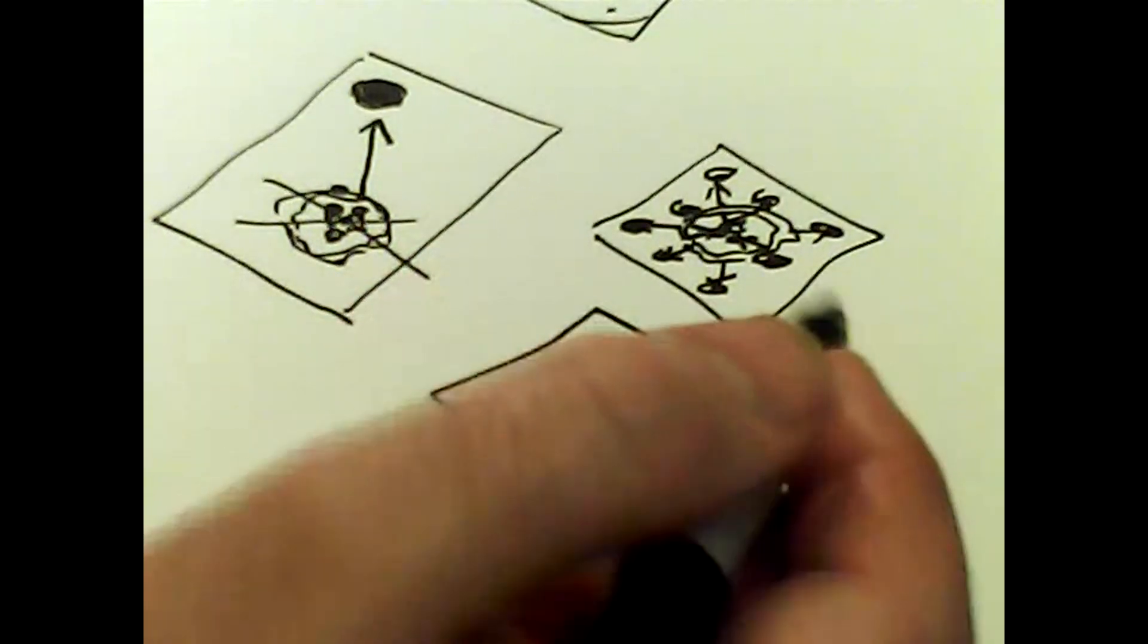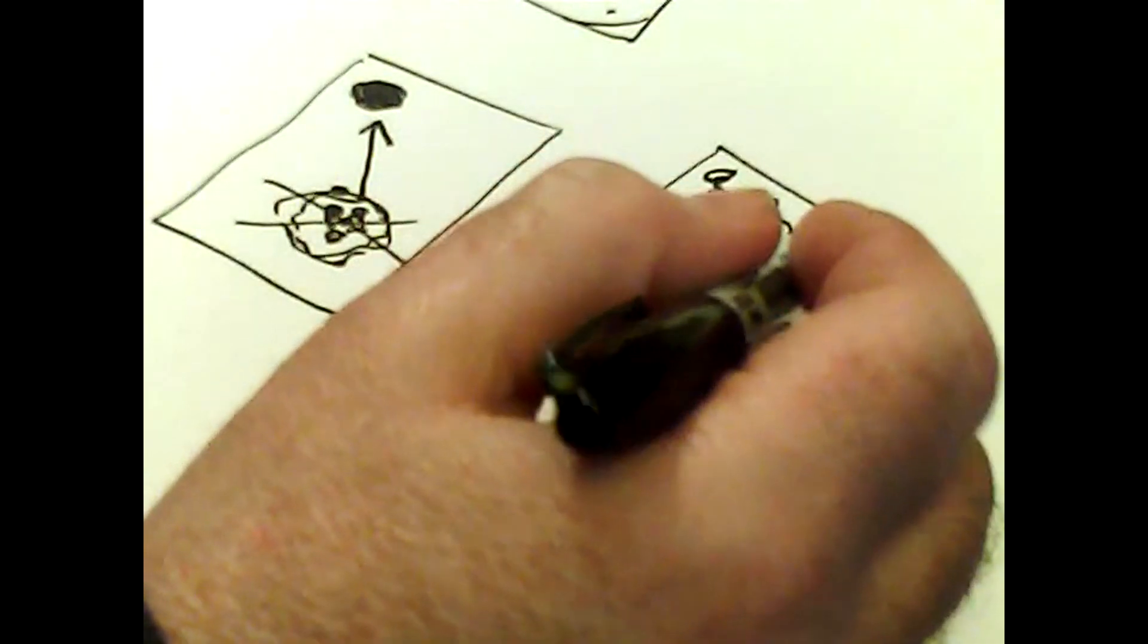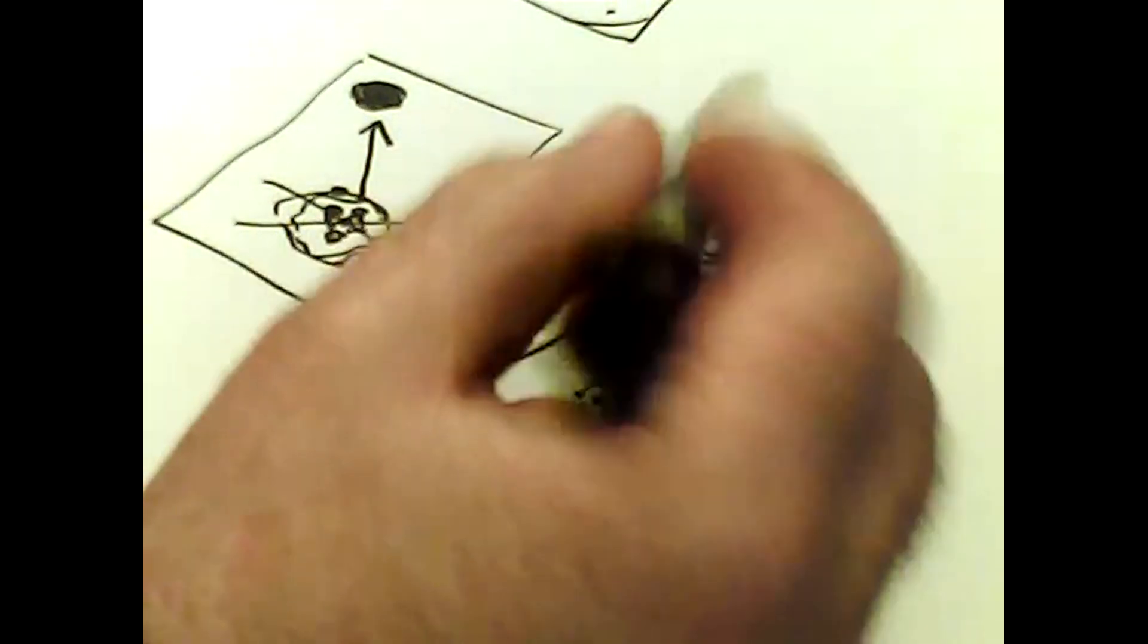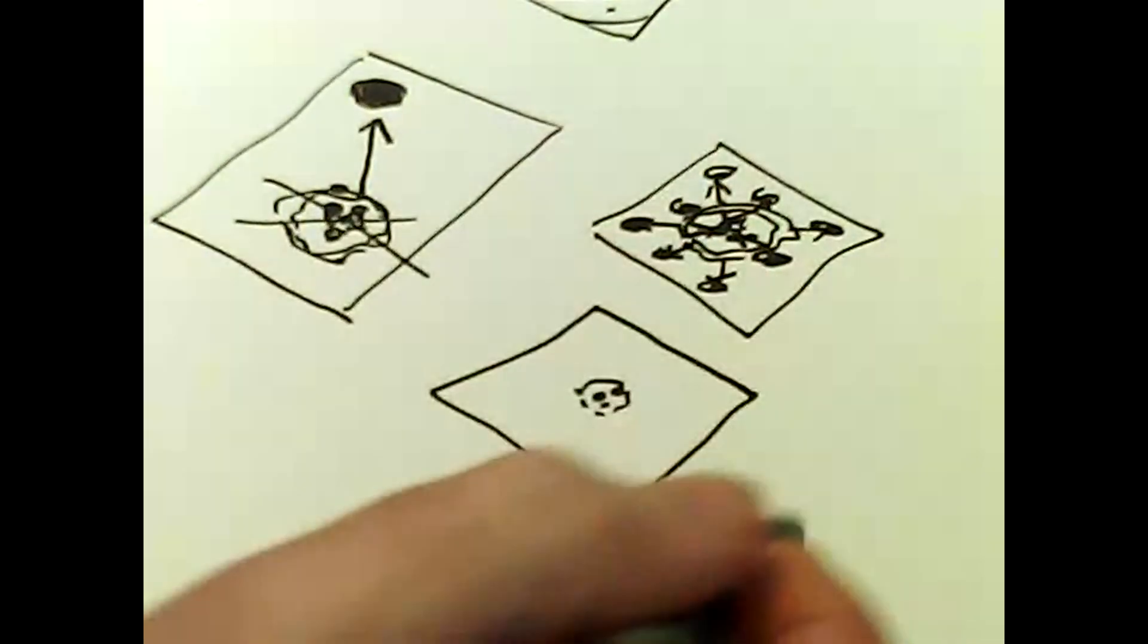And why is that? Well, we have an idea how much the universe should weigh, how much mass there should be in it. But when we look through our telescopes we can't see that mass. A lot of that mass we know is in dust clouds.